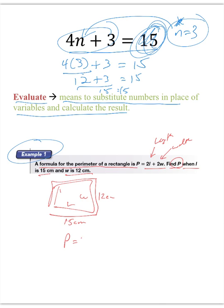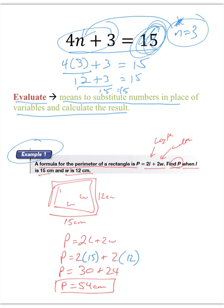So you have P is equal to 2L plus 2W. So we have P is equal to 2 times 15 plus 2 times 12. And so you have P is equal to 30 plus 24, therefore P is equal to 54, and it would be centimeters. And that would be your answer.